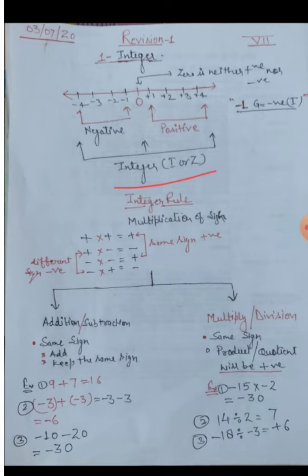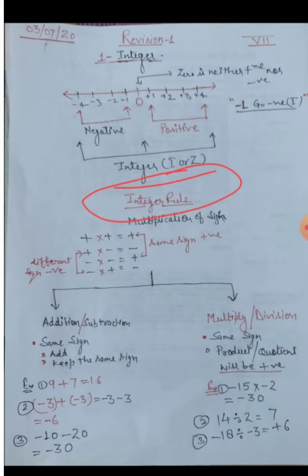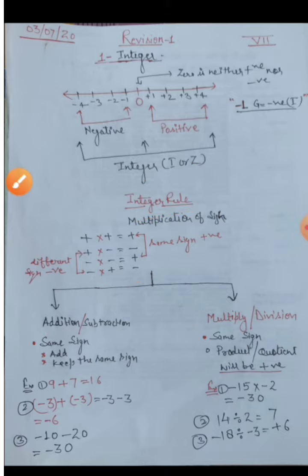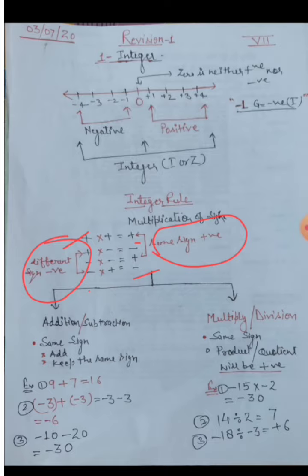Next are the integer rules, which are very important. We solve operations of integers — the four basic operations: addition, subtraction, multiplication, and division. The sign multiplication rule is: plus times plus gives plus; plus times minus gives minus; minus times minus gives plus. Same signs give a positive result; different signs give a negative result.